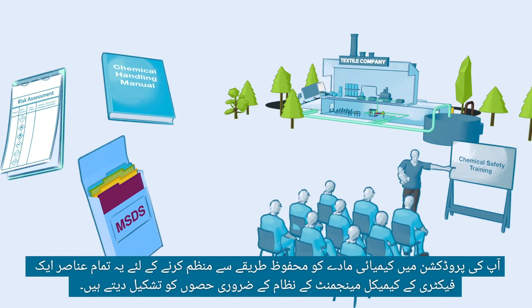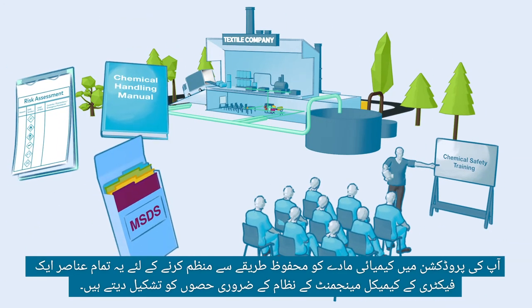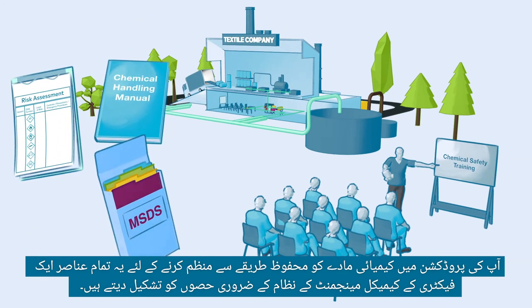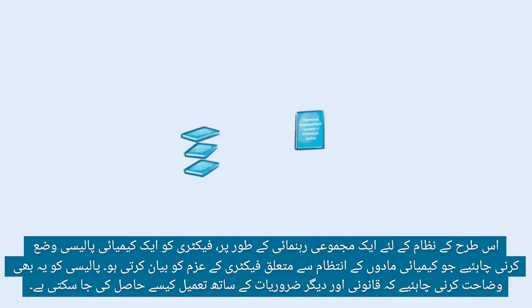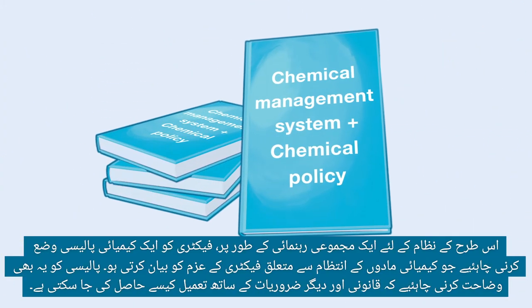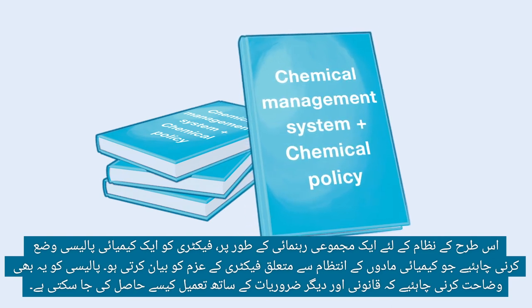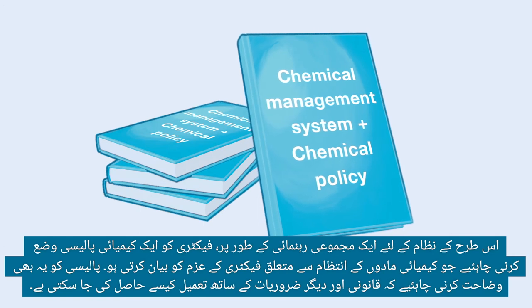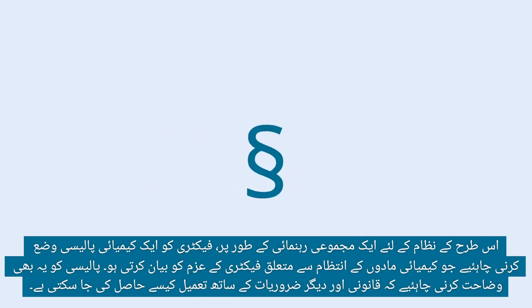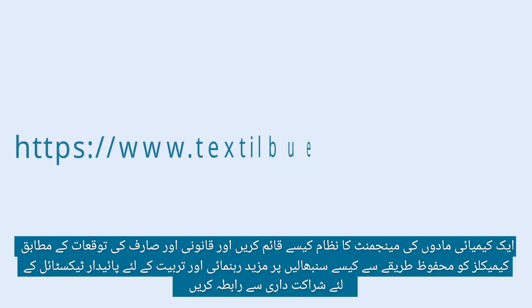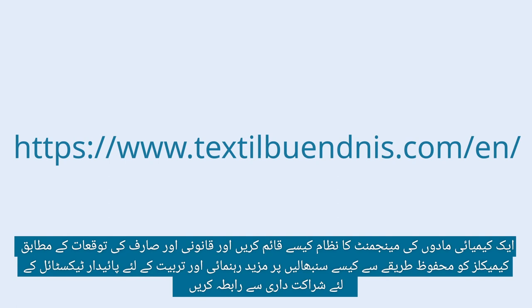All these elements for safely managing chemicals in your production form essential parts of the chemical management system of a factory. As overall guidance for such a system, the factory should formulate a chemical policy that outlines the factory's commitment to chemical management. The policy should also specify how compliance with legal and other requirements is to be achieved. For further guidance and training on how to set up a chemical management system and safely handle chemicals in line with legal and customer expectations, contact the Partnership for Sustainable Textiles.